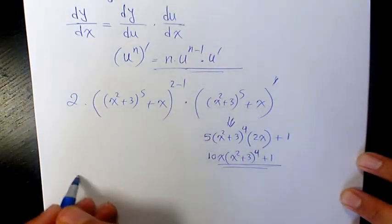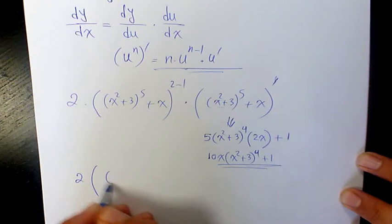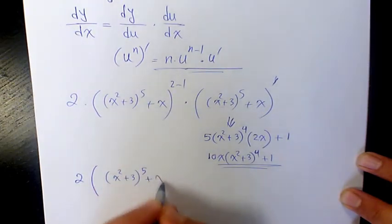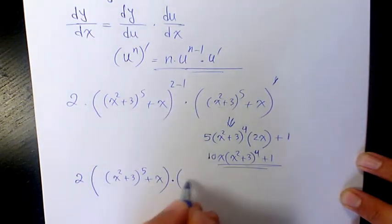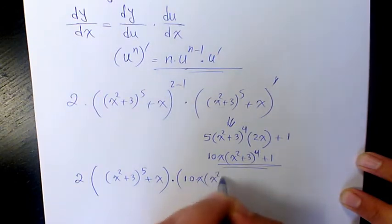So in total, it's going to be 2 times ((x² + 3)⁵ + x) to the power of 2 minus 1 is 1. We don't write it. Times (10x(x² + 3)⁴ + 1).